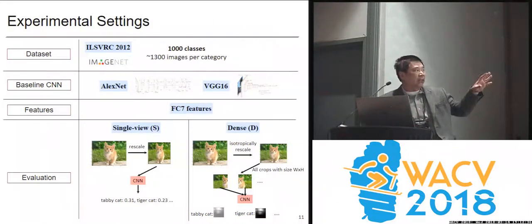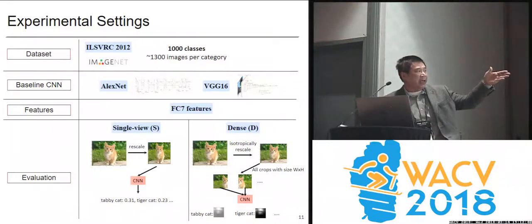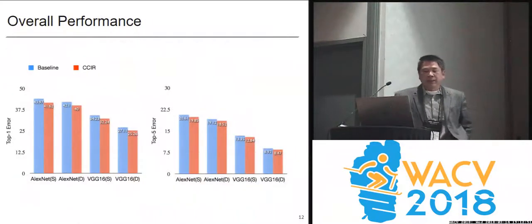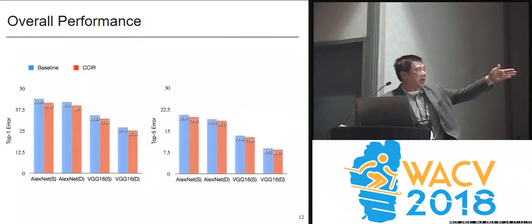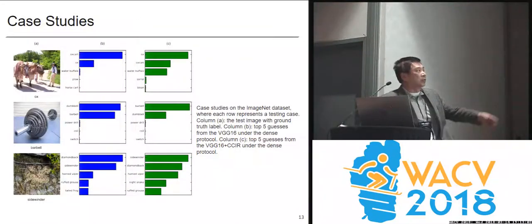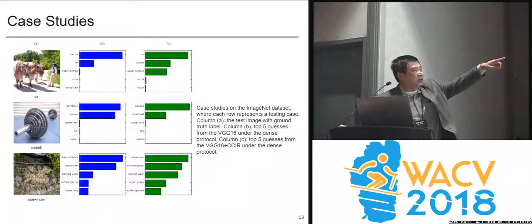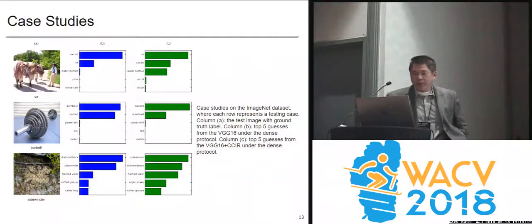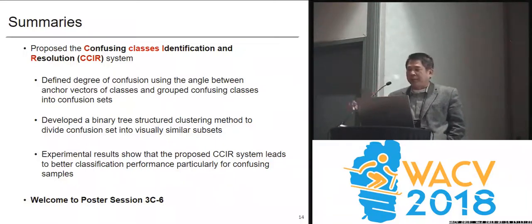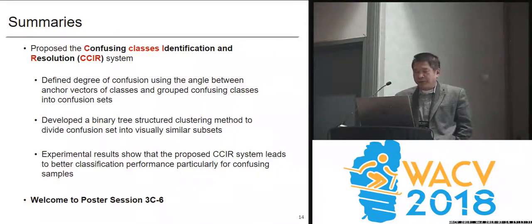In terms of experiments, we split two things: one is just rescaling the image by changing the aspect ratio, so the cat becomes a little bit deformed. The other one, we scale it uniformly, keep the aspect ratio, and pick multiple nodes. We can see the performance improvement. For AlexNet and VGG, we have the top-one error — we see about 2% improvement. Similarly for top-five, it's also about 2% improvement. This shows another example: the first choice is correct, but in the original network it was the second choice. After we do the confusion class resolution, it becomes number one. We basically provide a confusion class identification and resolution system using the CNN filter weights to do that. Welcome to our poster session 3CB.